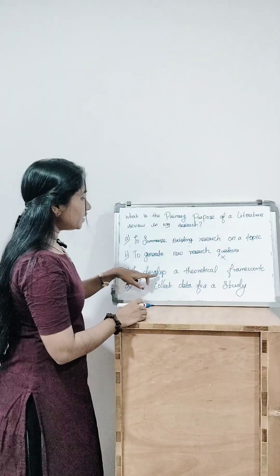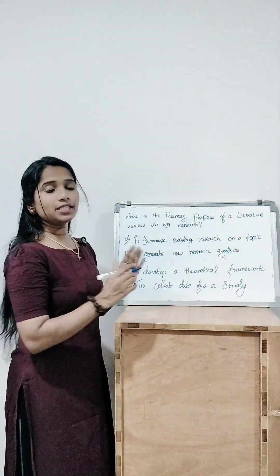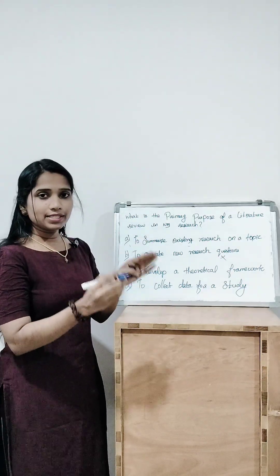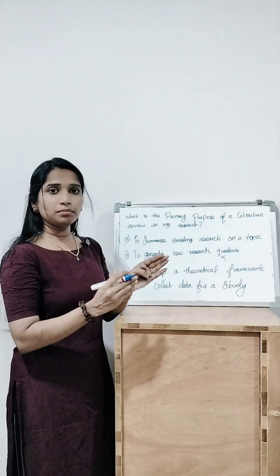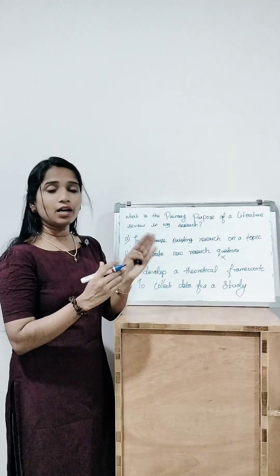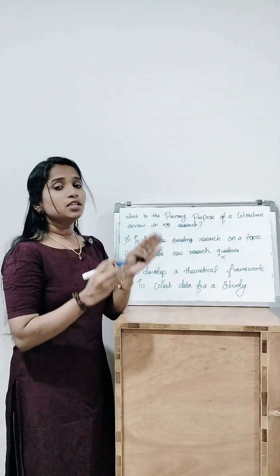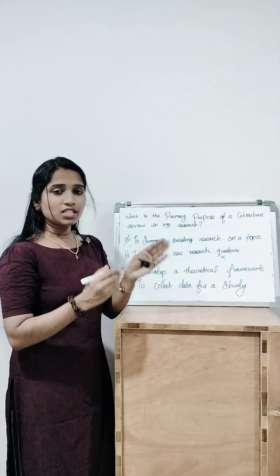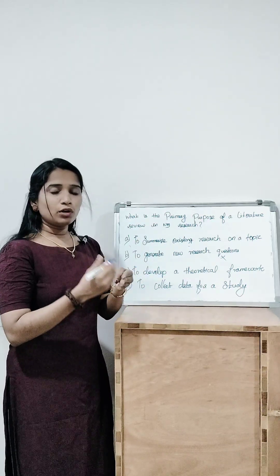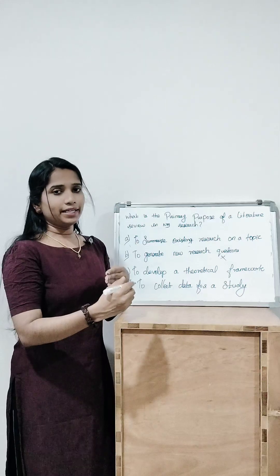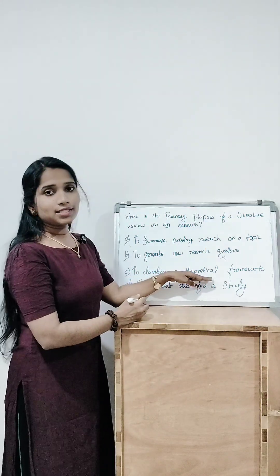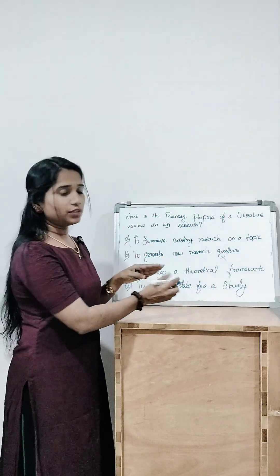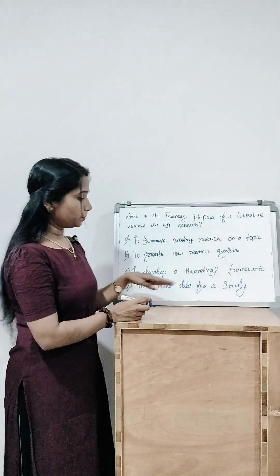Option C is to develop a theoretical framework. A theoretical framework means when you want to do research, you follow some existing theory or your own idea — that is the theoretical framework. This is entirely different from review of literature, so we can exclude this option.